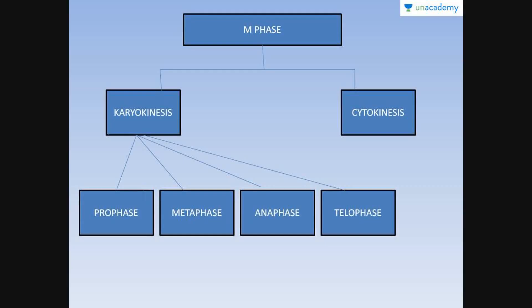The M phase has been divided into karyokinesis and cytokinesis. Karyokinesis comes from karyon meaning nucleus and kinesis referring to division, while cytokinesis comes from cyto meaning cytoplasm. Karyokinesis has been further divided into prophase, metaphase, anaphase, and telophase — the four stages during which rearrangement of chromosomes and separation of the two daughter cells occurs.